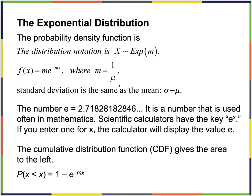The distribution has one parameter, m. The probability density function is written as f(x) = me^(−mx), with the notation x ~ Exponential(m), where m = 1/μ and the standard deviation equals μ. It looks very similar to the Poisson distribution. The number e equals 2.71828 and goes on forever — it's a fundamental constant in mathematics, like pi is in calculus.